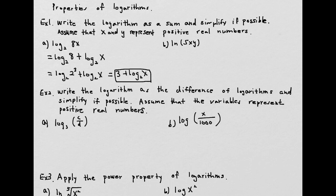For the next one we have 3 multiplications: 5 times x times y. So this means we can extend it into 3 terms using addition because it's multiplication. So: natural logarithm of 5, plus natural logarithm of x, plus natural logarithm of y. The natural logarithm small base is e and we don't see any e as the larger base, so we cannot reduce any further.